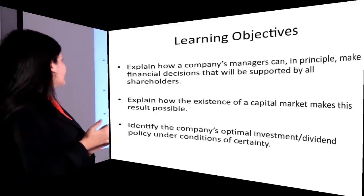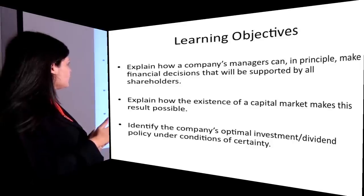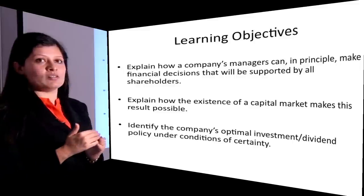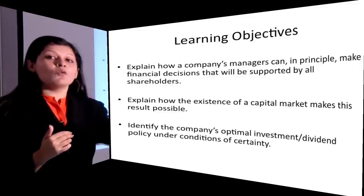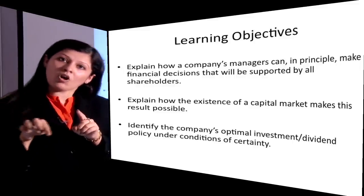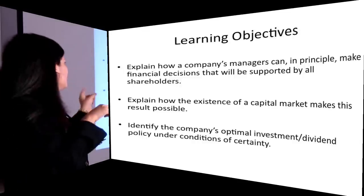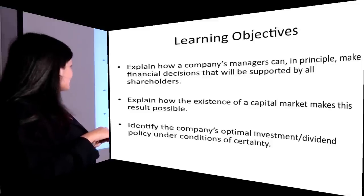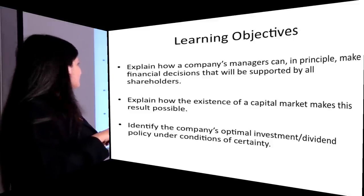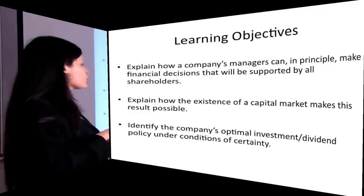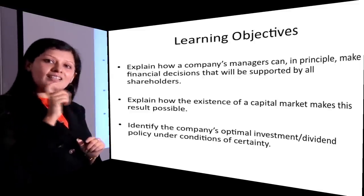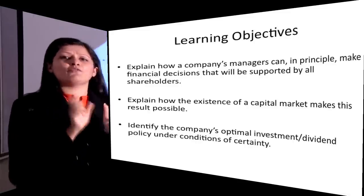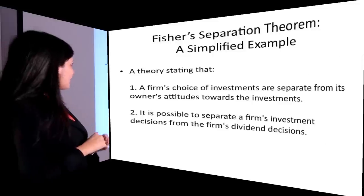The learning objectives: explain how a company's managers can in principle make financial decisions that will be supported by all shareholders. Fischer developed a theorem where decision making will be supported by all shareholders because of the existence of the capital market line. Also, identify the company's optimal investment and dividend policy under conditions of certainty.